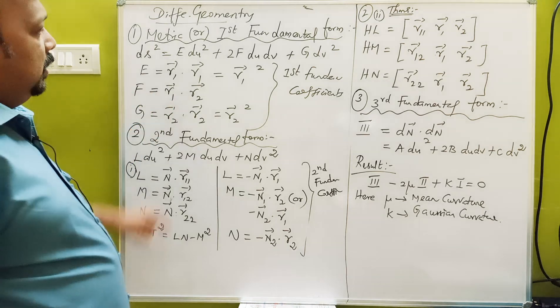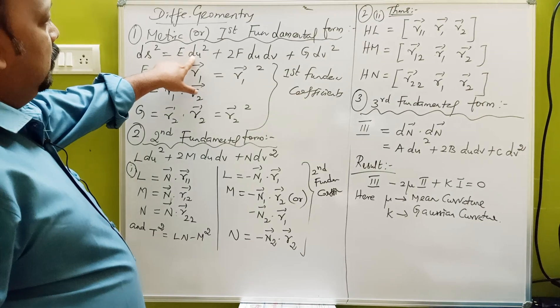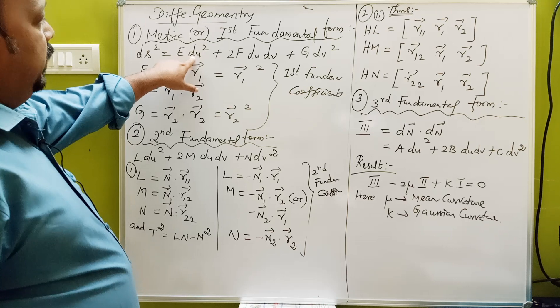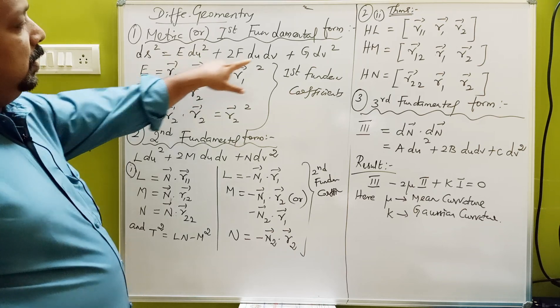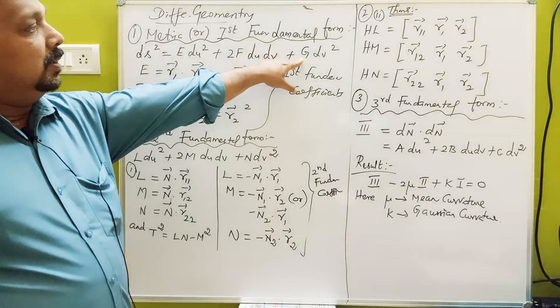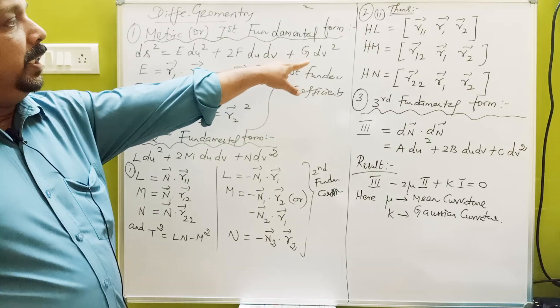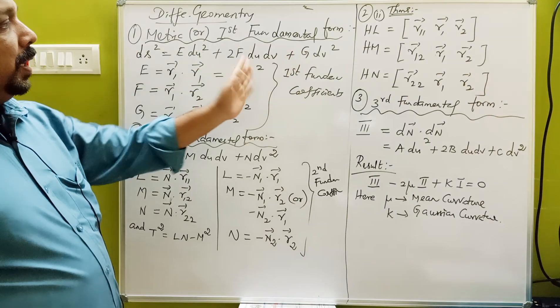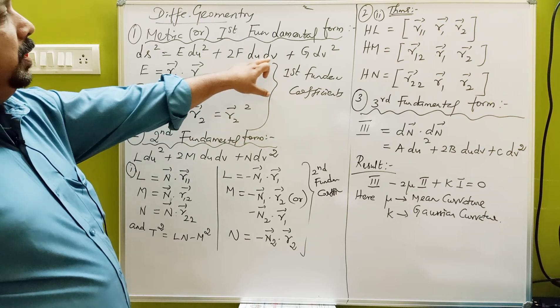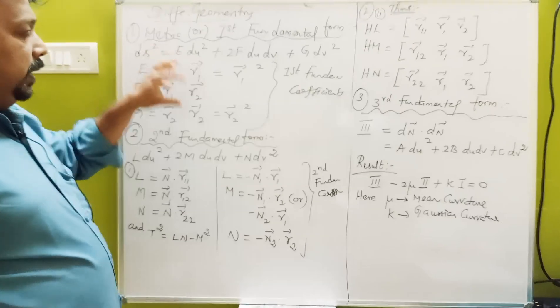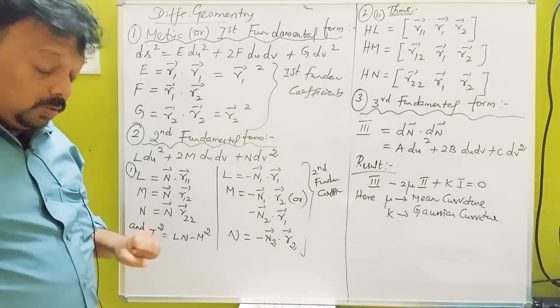What do we do? E · du² — R1, R1 — and G · dv² — R2, R2. What do we do? 2F · du · dv — R1, R2. What do we do? Let me tell you.